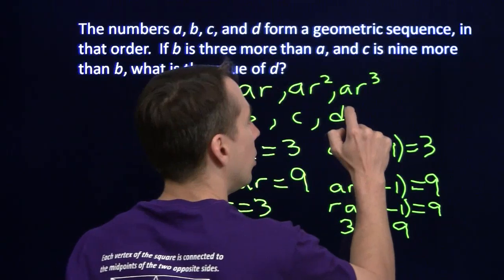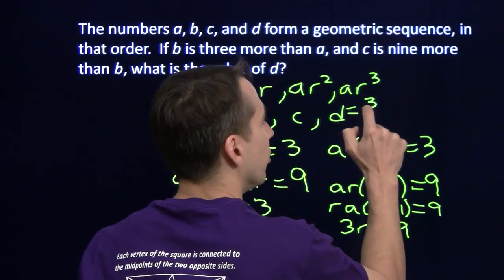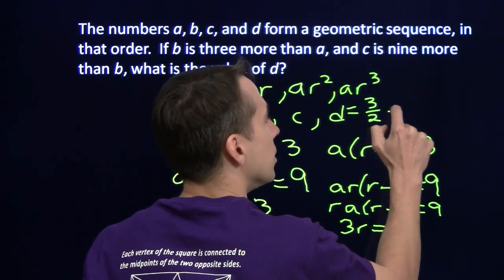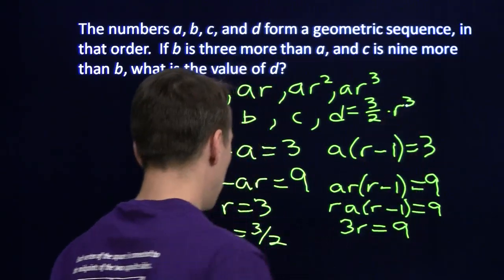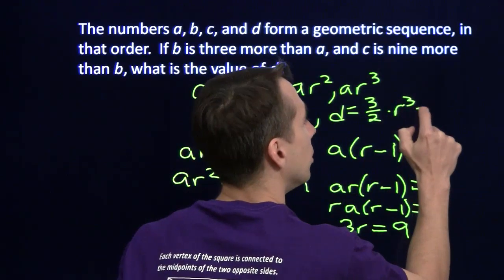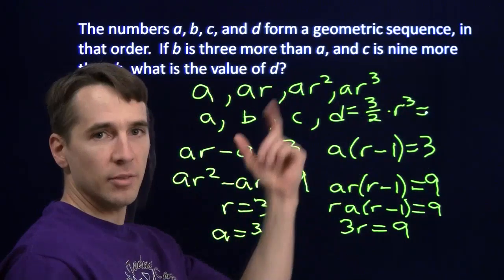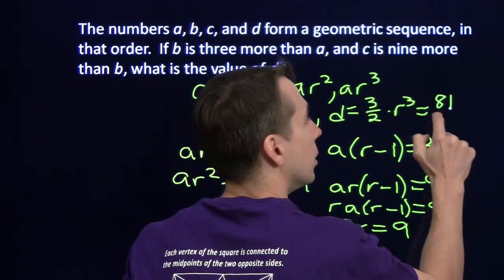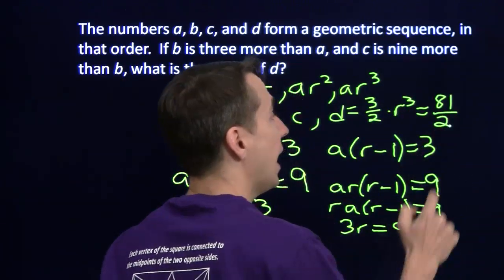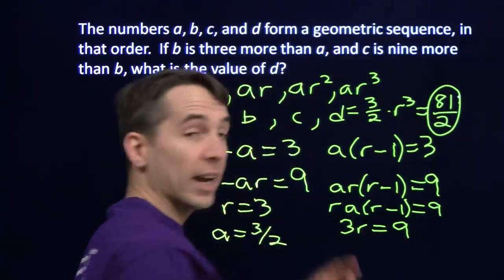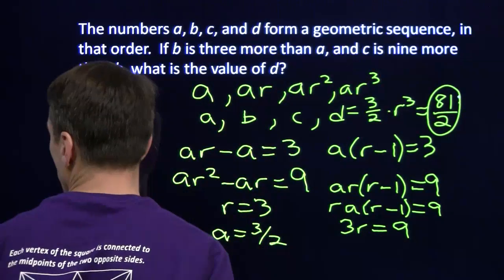D is A times R cubed. I've got A. I've got R. I can find D. This is three halves times R cubed. R cubed is three. Three cubed is 27. 27 times three halves is 81 halves. We've tackled this problem. On to the last one.